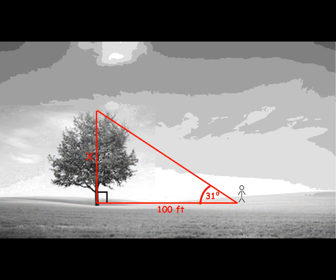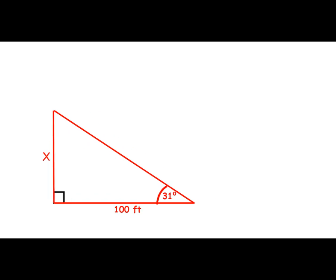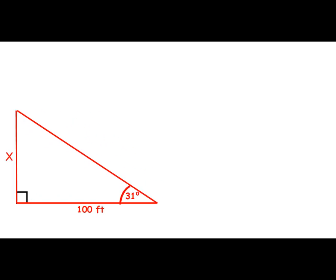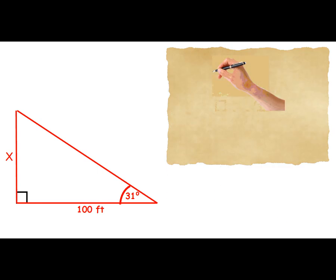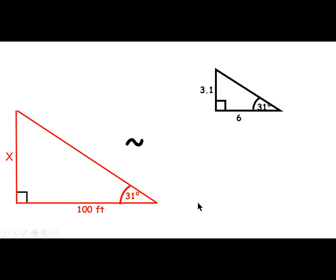We take the tree away and just look at the triangle. We're trying to find the length X, the short leg. We know the bottom length — the long leg — and we know one of the angle measures. What somebody did a long time ago is they drew a similar triangle on a sheet of parchment. We know these two triangles are similar because they both have a 90-degree angle and a 31-degree angle. If you draw it precisely, you know the triangles are similar by the angle-angle rule. Then you can use the little triangle to find the missing measurement in the big triangle.